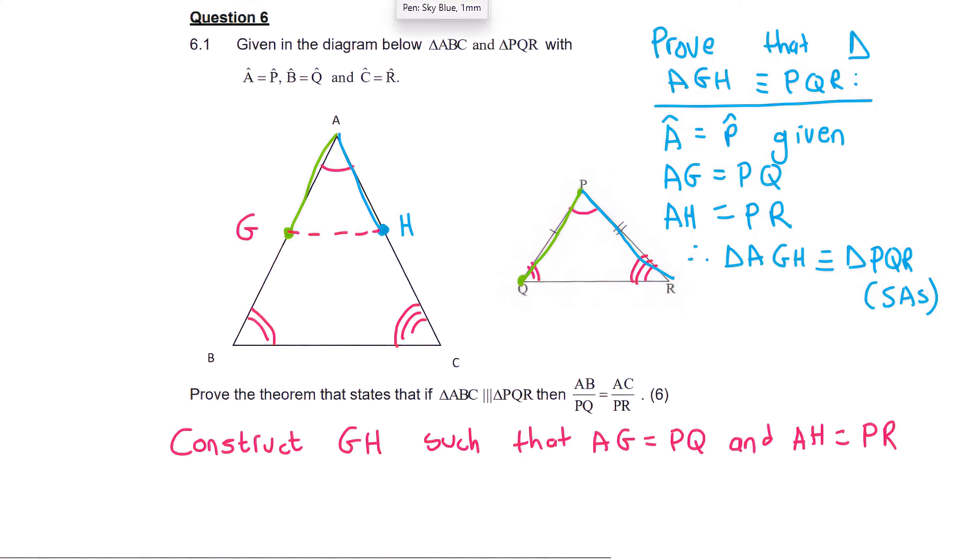Now we can say, therefore angle AGH, which is this one, must be the same as angle PQR. And so that means that this one has these two lines and this one has these two lines. And so all of a sudden it means that this angle must be the same as this angle. So we can now say, therefore angle AGH is the same as angle B.